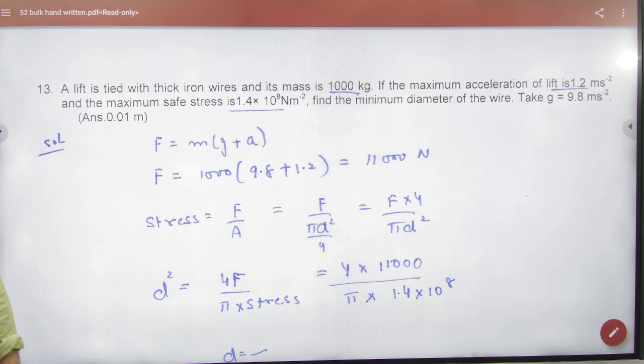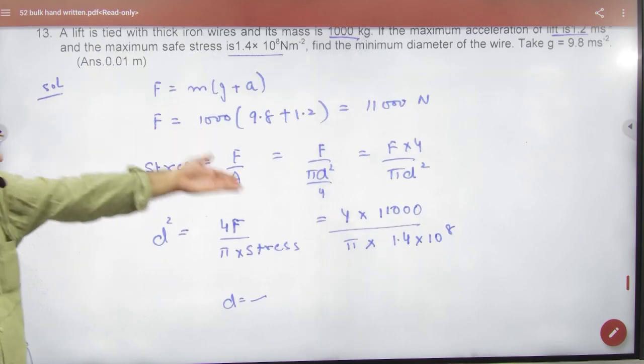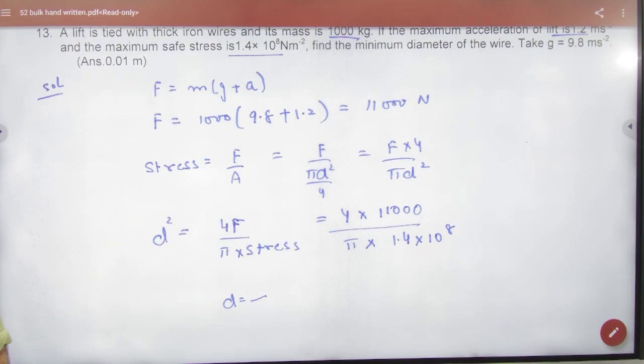Upar ja raha hai. Tum ulta bhi bol sakte ho, niche bhi aa sakti hai. Tumhe do case dene padenge. Agar wo upar ja raha hai to m into g plus a. Agar niche aa rahi hai to m into g minus a. Jo bhi force hai, uski value put kar ke nikal lena. Maine koi bhi ek assume kar di: m into g plus a.